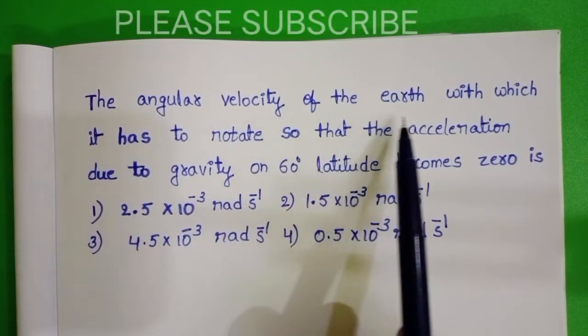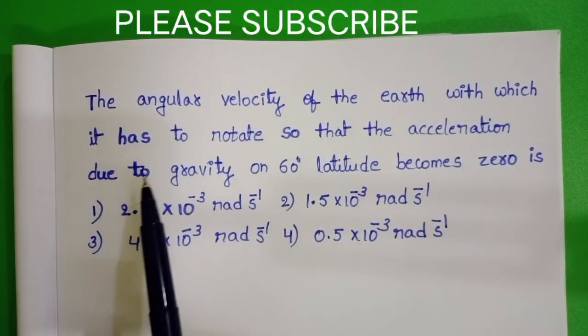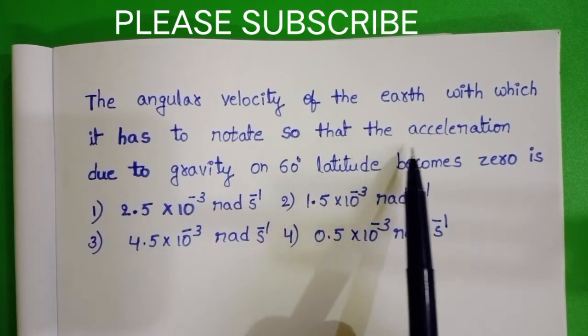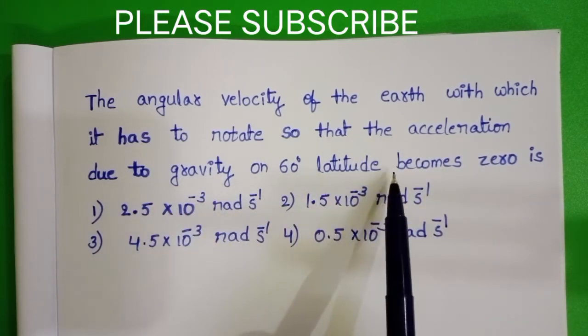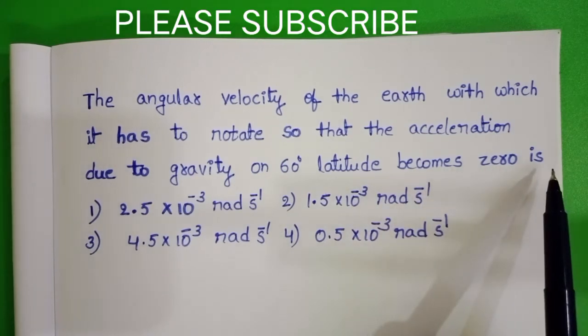The angular velocity of the earth with which it has to rotate so that the acceleration due to gravity on 60 degree latitude becomes zero is.